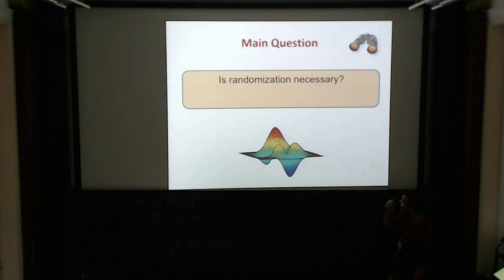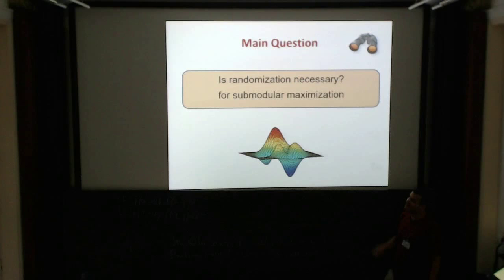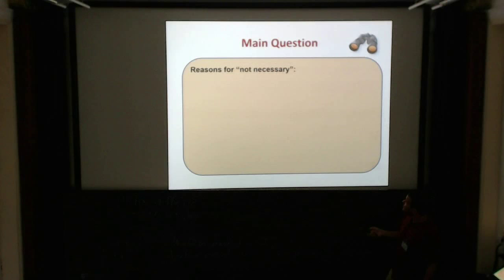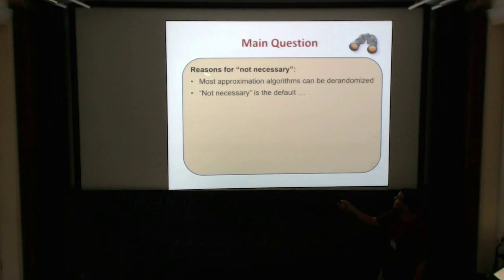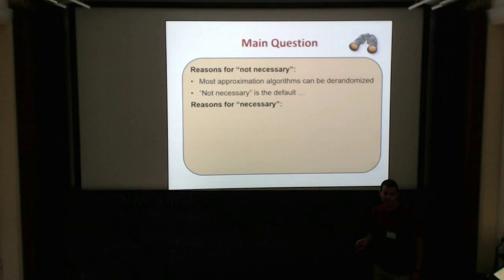The main question I want to address is whether randomization is really necessary for submodular maximization. There are reasons to believe it is unnecessary: in other fields of approximation, most approximation algorithms can be derandomized, and in general, not necessary is the default answer. But in the case of submodular maximization, there are reasons to believe that necessary is the answer.